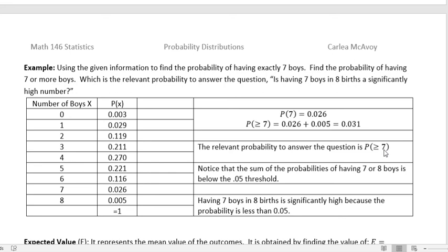Notice that the sum of the probabilities for having seven or eight boys is below our 5% threshold, or 0.05 threshold. It's 0.031. Since that number is less than 0.05, we would say that having seven boys in eight births is significantly high because the probability of that is less than 0.05. Have a fantastic day.